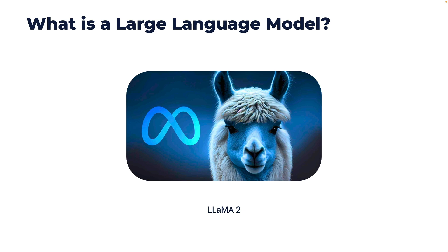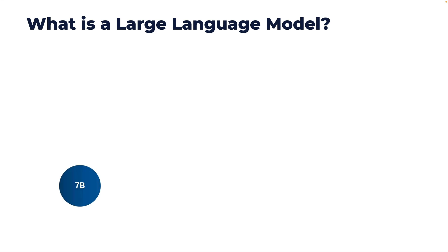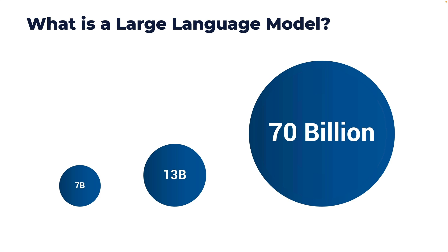The number of parameters LLMs have is also considerable. For example, in the demo we saw LLaMA 2, which comes with three different flavors based on parameter size: 7 billion, 13 billion, and 70 billion parameters. The model with the largest number of parameters is more compute intensive, requiring more GPUs, more memory, and more CPUs to perform at acceptable latency. The smaller parameterized models can be launched even on low-end compute environments, including desktop computers or cloud instances with a single GPU.